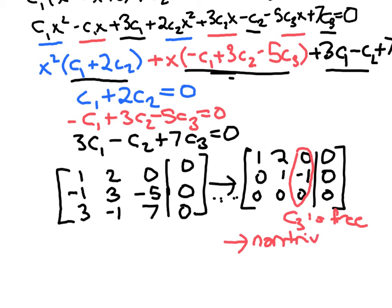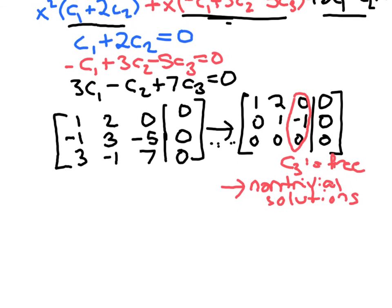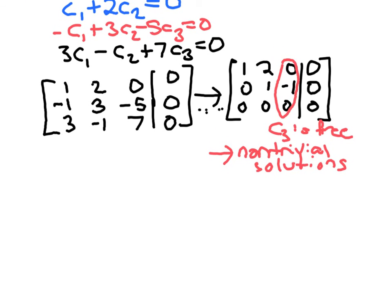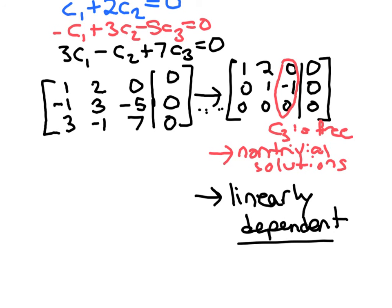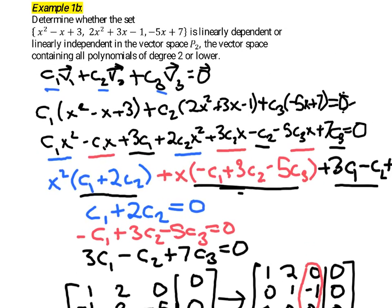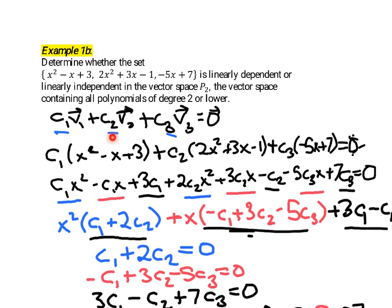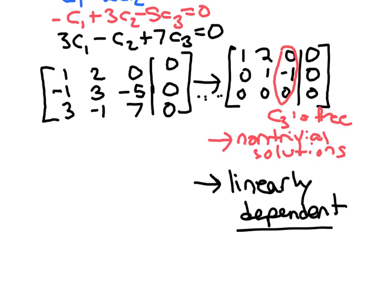So the free variable here indicates non-trivial solutions, even though we haven't done much to specify them. We know they're there. And so the collection of vectors must be linearly dependent. Any time that original system of equations has non-trivial solutions, then the collection of vectors is linearly dependent. And that's what we have here.